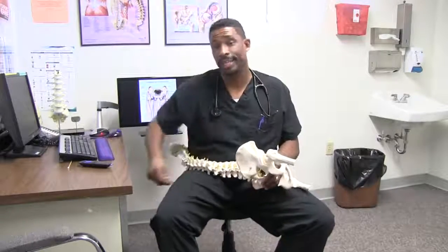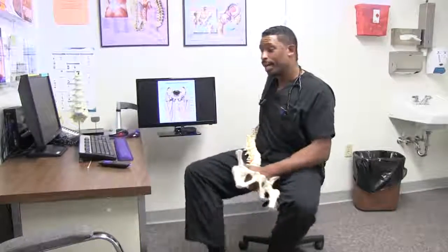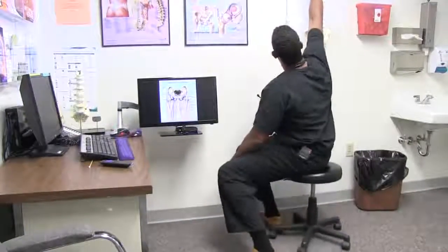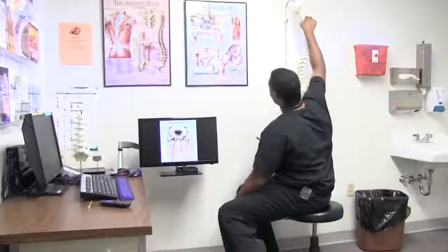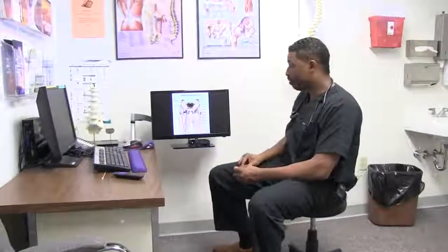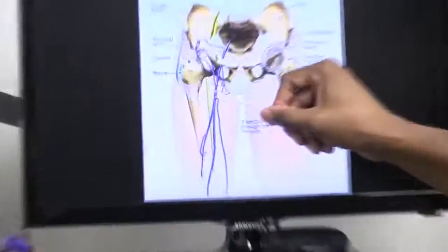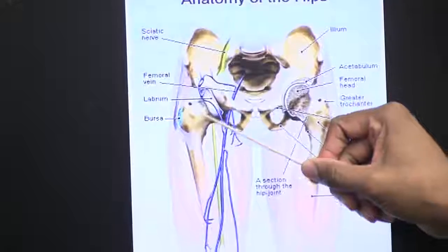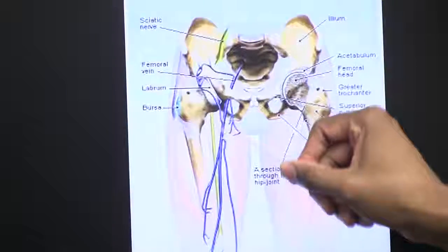Secondly, there's another potential problem that can exist: hip bursitis. The bursa itself, as you can see from this picture, has a component of fat that exists between the bone and the muscle.